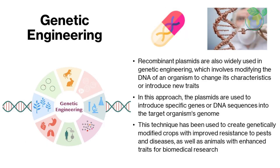Recombinant plasmids are also widely used in genetic engineering, which involves modifying the DNA of an organism to change its characteristics or introduce new traits. The plasmids are used to introduce specific genes or DNA sequences into the target organism's genome. This technique has been used to create genetically modified crops with improved resistance to pests and diseases, as well as animals with enhanced traits for biomedical research.